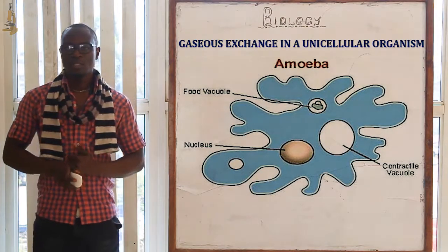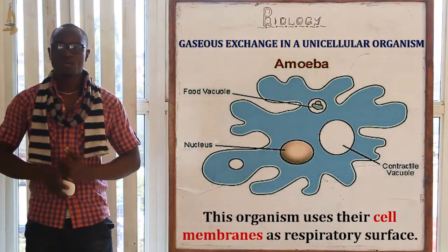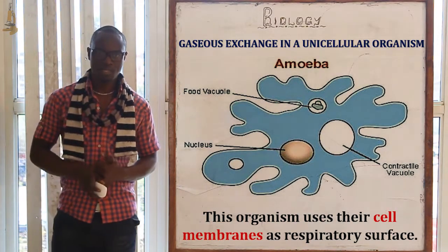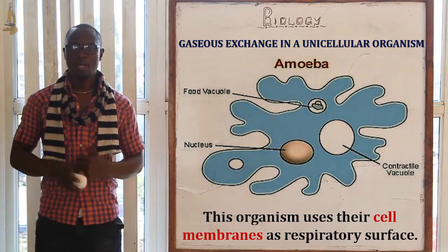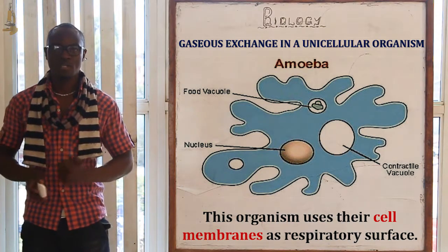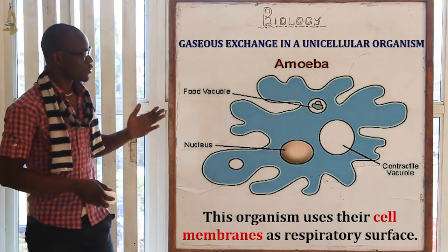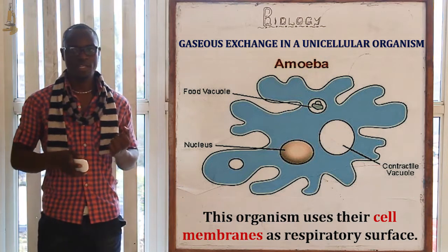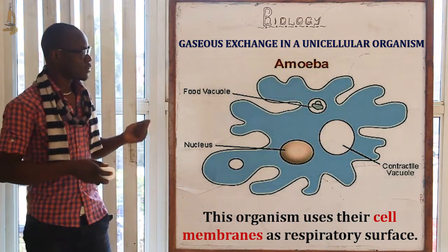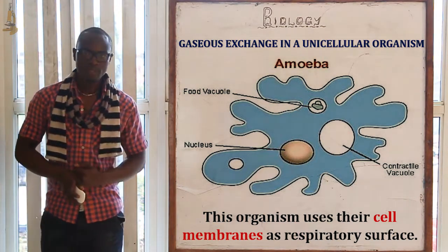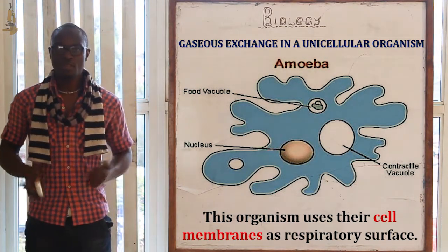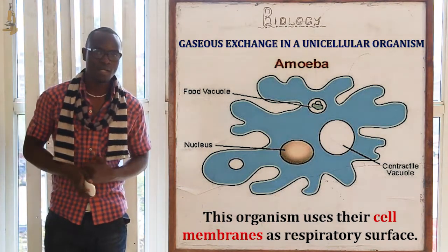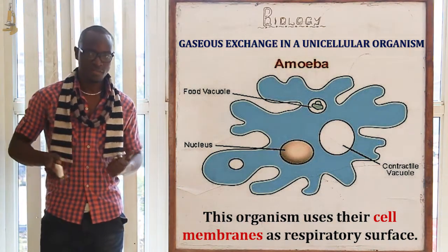Let's look at gas exchange in unicellular organisms. Examples of unicellular organisms include protozoa, bacteria, and amoeba. These organisms mainly use their cell membrane as their respiratory surface.